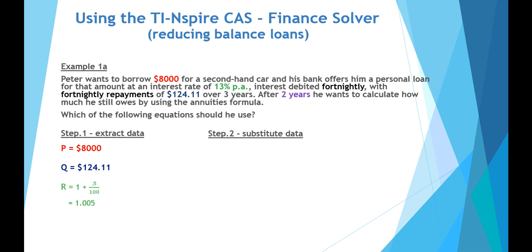R, the compounding or growth factor, can be calculated by looking at the 13% per annum and dividing that fortnightly. So 13 divided by 26 fortnightly makes 0.5% per fortnight. So the growth factor is 1 plus 0.5 over 100, or 1.005. The N, the number of payments, after two years, would be two lots of 26 fortnightly payments, which comes out to 52.